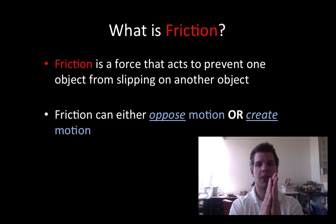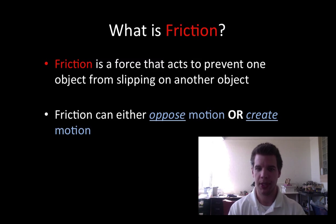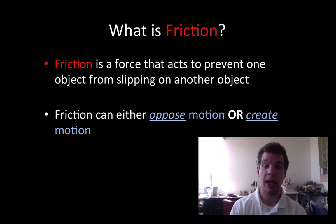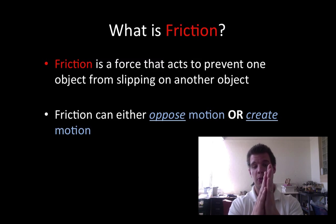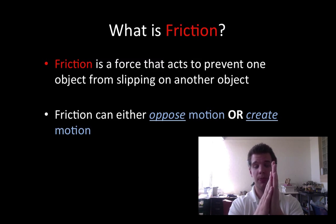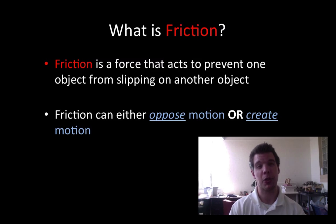So I have two objects that are touching each other. Friction is working to prevent them from gliding across each other. There are two ways that it can work: friction either opposes motion, so two objects are moving on each other and friction is working against that motion, or friction can actually create motion. And so we're going to explore what that looks like.